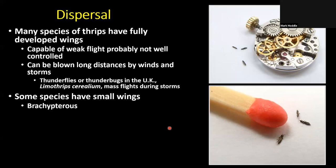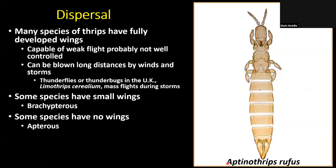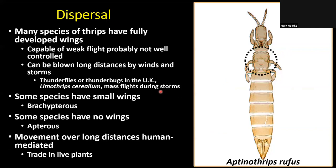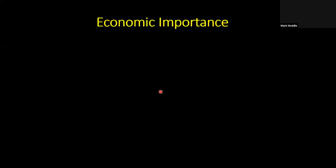Some species have very small wings — referred to as brachypterous — and some like Aptinothrips rufus, a grass-feeding species found in California, have no wings at all and are called apterous. Movement over long distances is human-mediated, mainly through the trade in live plants. Undetected populations of thrips on nursery plants coming out of Florida into California resulted in the introduction of Scirtothrips dorsalis, an important agricultural pest and quite serious pest of roses, especially at the Huntington Gardens in Southern California.